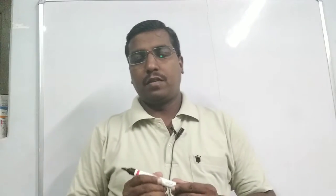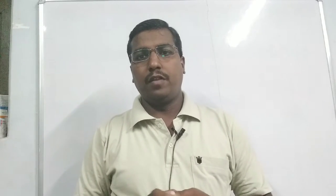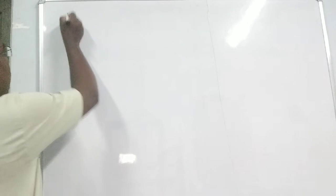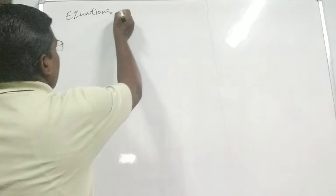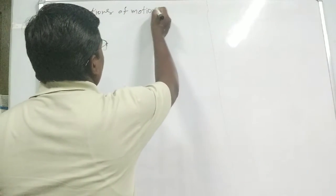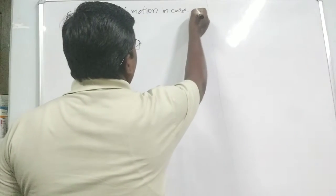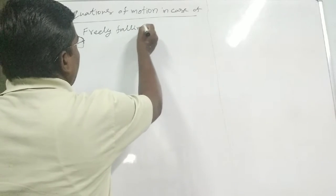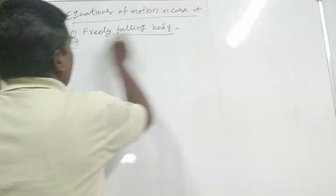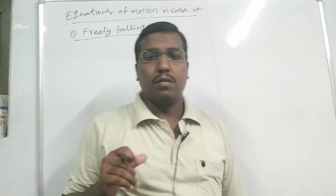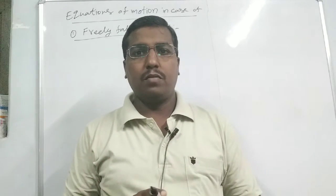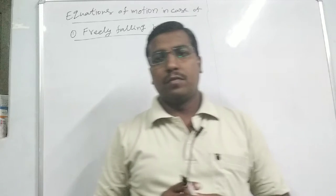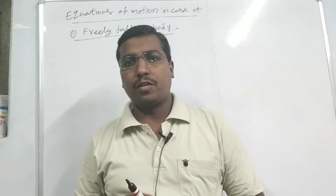Students, next we discuss about equations of motion for a freely falling body and vertically projected body. First of all, we write equations of motion in the case of a freely falling body. We release an object above a certain height from the ground — this is called a freely falling object or freely falling body.